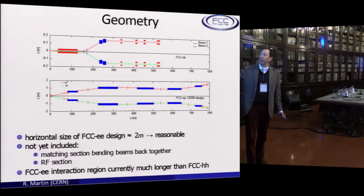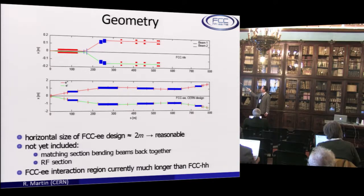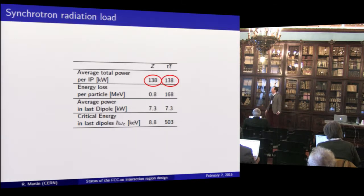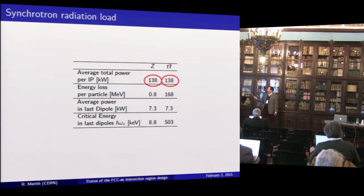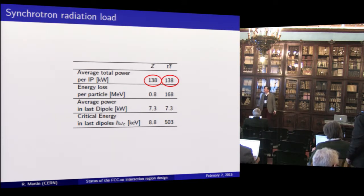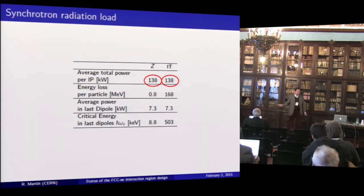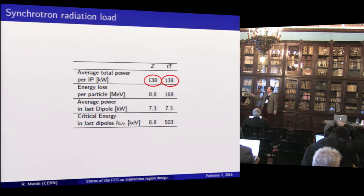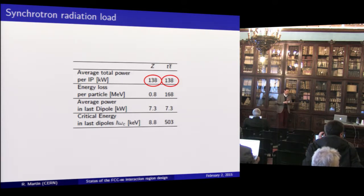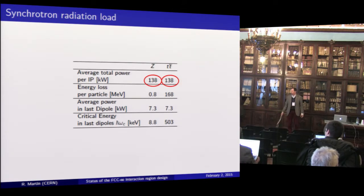When we leave the 800 meters, the beams are still diverging and have a distance of the order of two meters. What is new and has not been shown before is there's now a calculation of the synchrotron radiation load, and it is 138 kilowatts per IP. This by itself is not a disaster — it's fine. We need to see exactly how we're going to shield the detector from all this, but as far as the synchrotron radiation budget is concerned, this is not an alarming figure.